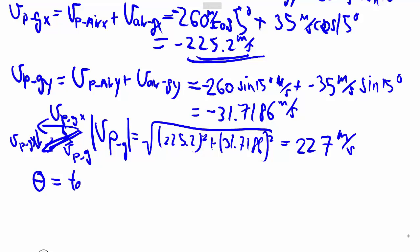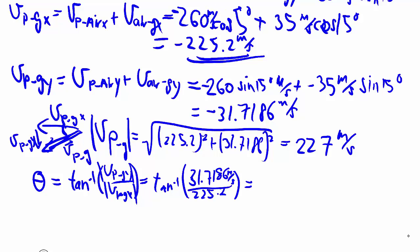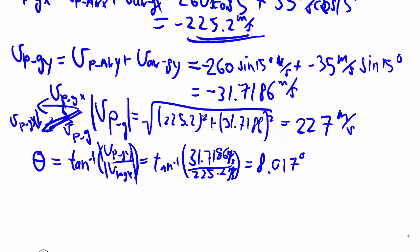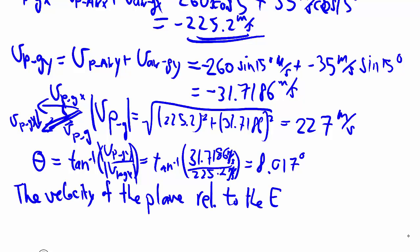Again, using the inverse tangent of v_p-g y over v_p-g x, keeping only the distances of course, and the meters per second cancels out. And we arrive at our answer that the velocity of the plane relative to the earth. In this case, the angle starts west and goes south, south of west.